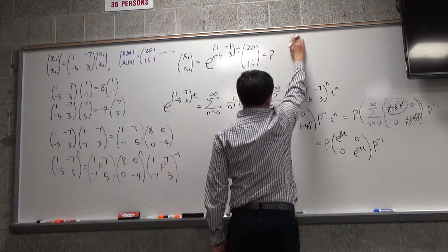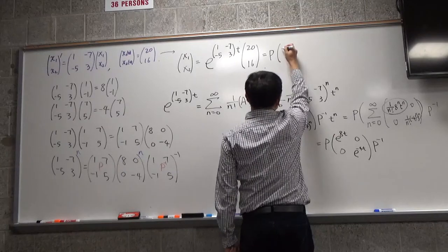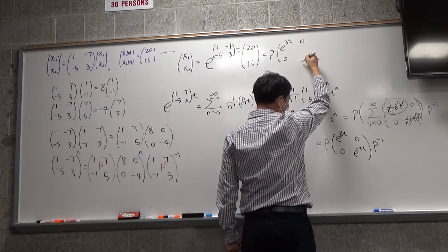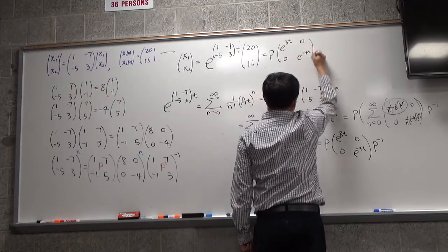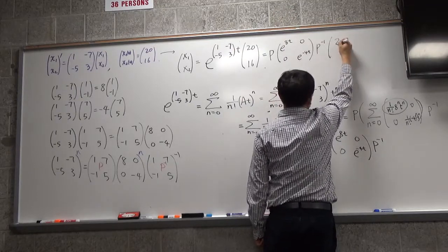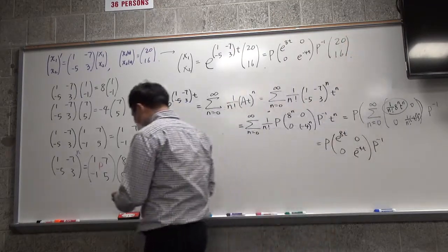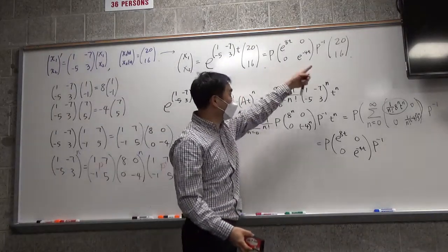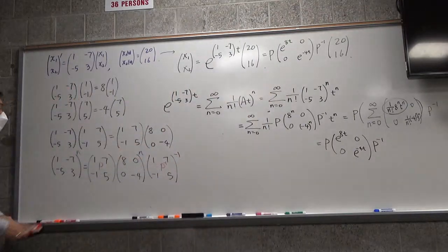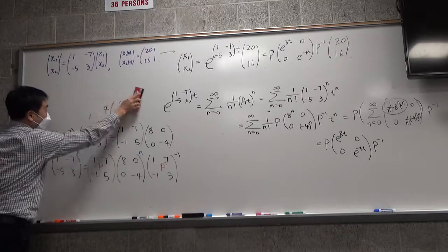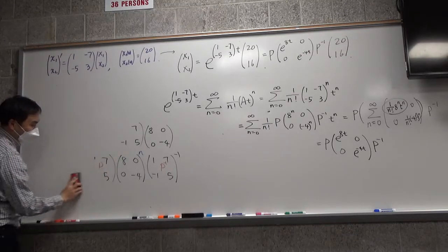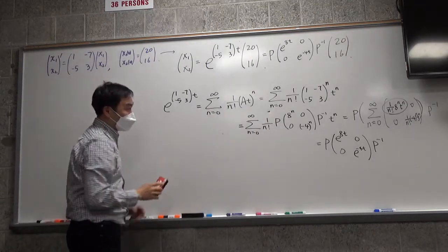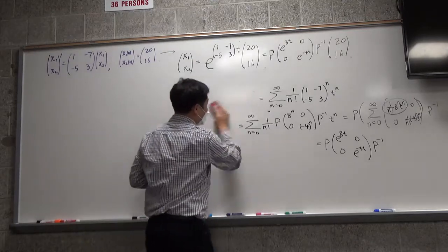So the solution is y = P · [e^(8t), 0; 0, e^(-4t)] · P⁻¹ · y₀, with y₀ = [20, 16] and initial value [20, 16]. Now let's actually compute this. We need P⁻¹. P = [1,7;-1,5], so P⁻¹ = (1/(1·5 - 7·(-1))) · [5,-7;1,1] = (1/12) · [5,-7;1,1].